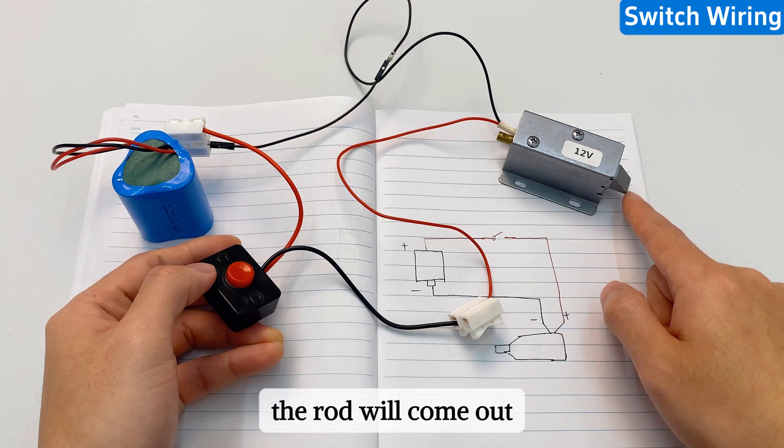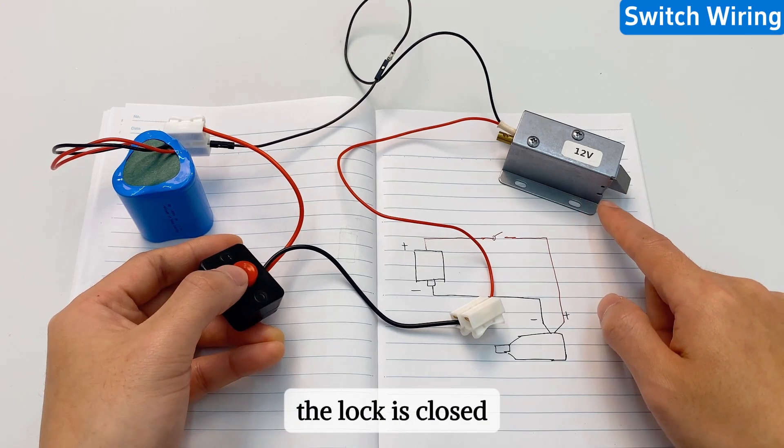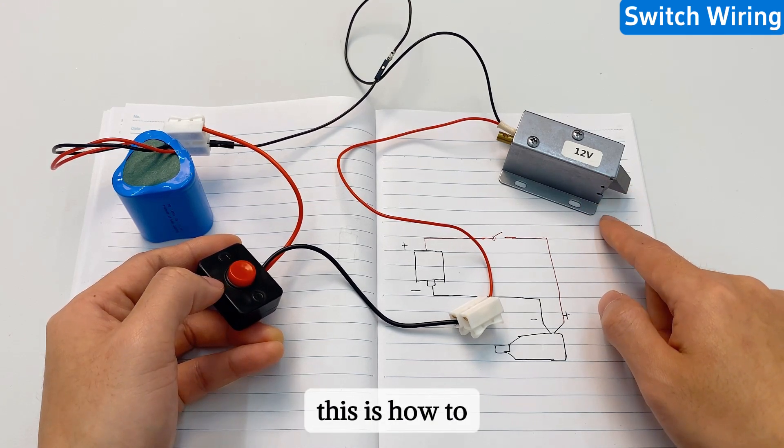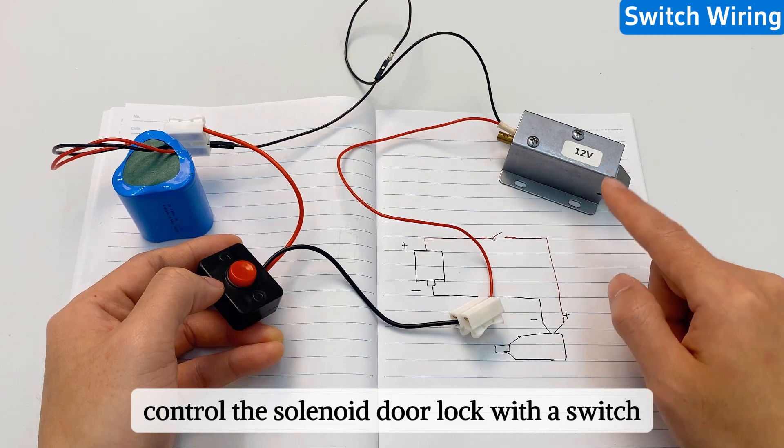When we release it, the rod will come out. The lock is closed. This is how to control the solenoid door lock with a switch.